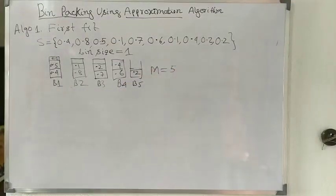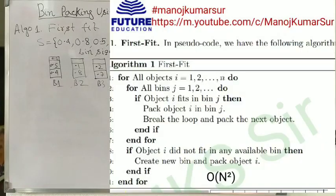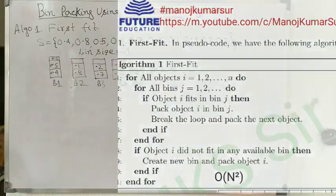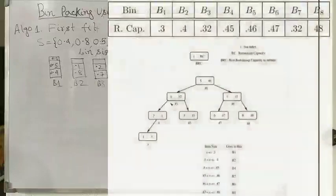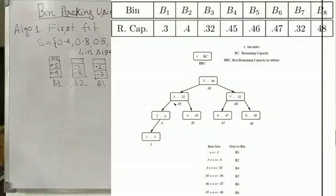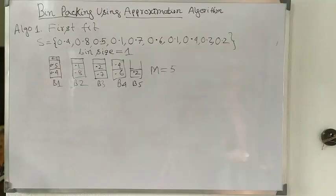The complexity of the First Fit algorithm is O(n²) because it requires two for loops. However, if we use a balanced search tree, the height is log n, and the complexity becomes O(n log n).